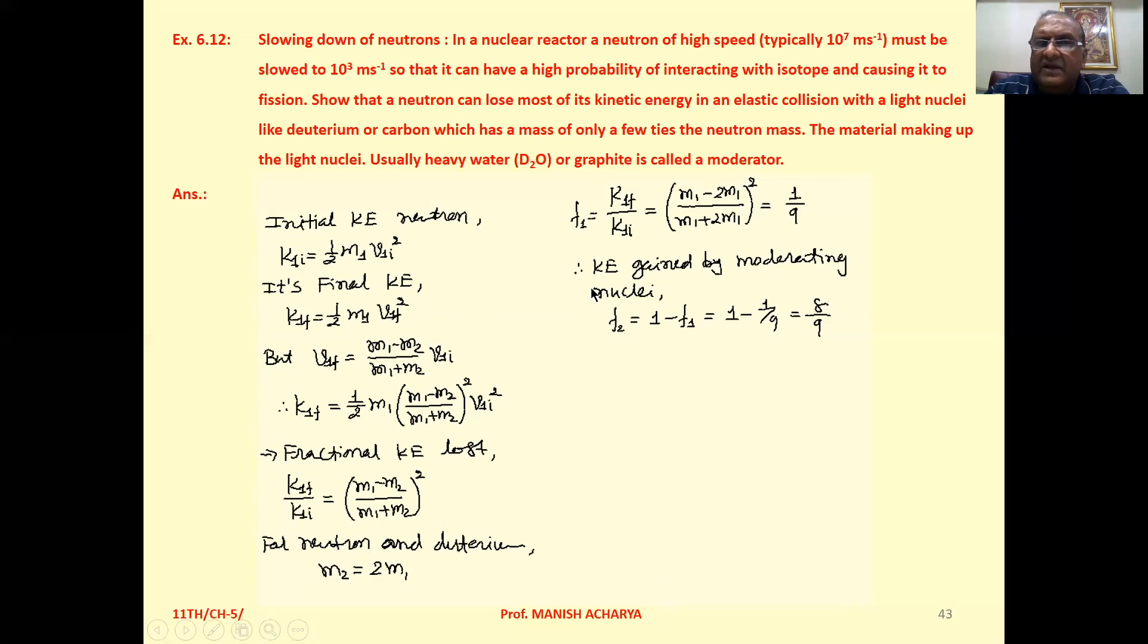This implies that kinetic energy gained by moderating nuclei, F₂ = 1 - F₁ = 1 - 1/9 = 8/9.